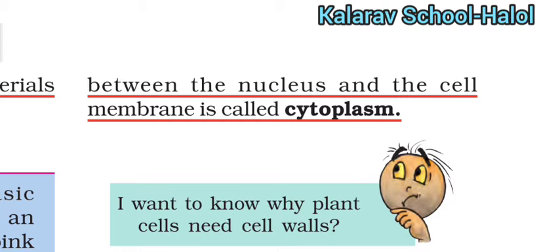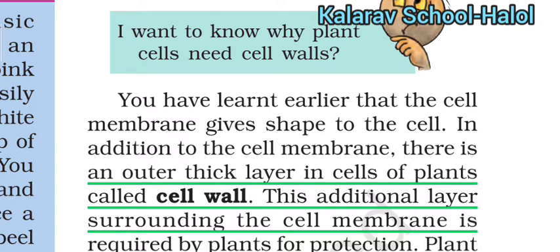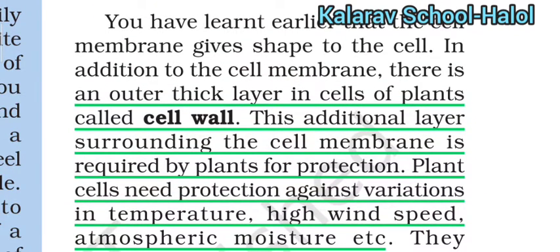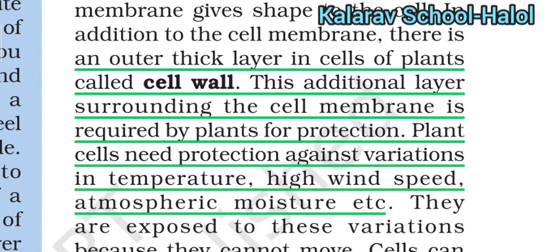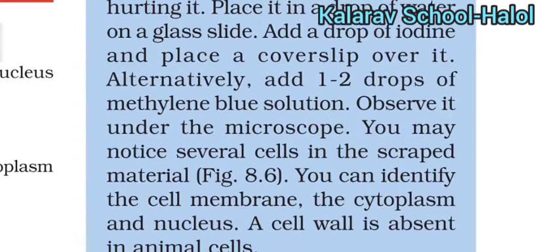So we have studied cell wall, cell membrane, plasma membrane, nucleus, and cytoplasm. Cytoplasm is the jelly-like liquid placed between the nucleus and the cell membrane. The cell membrane gives shape to the cell, and the outer thick covering — the cell wall — is only present in plant cells. The cell wall provides the plant protection, including protection against temperature variation, high wind speed, and atmospheric moisture. So the cell wall is very important for the protection of the plant.